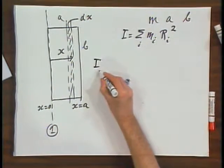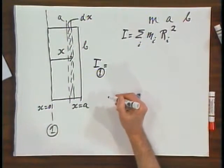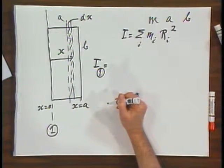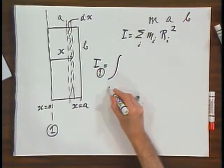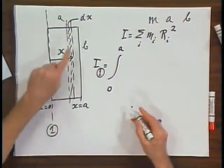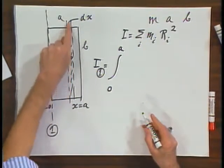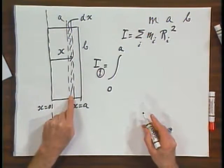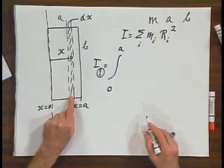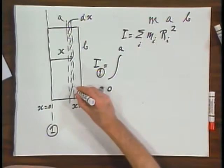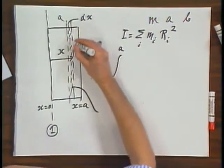So I, about this axis of rotation now, is going to be an integral from x equals 0 to A of this mass element times x squared, because that's the distance to this mass element. So I first have to calculate now how much mass is in this ribbon.